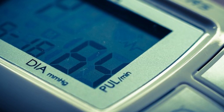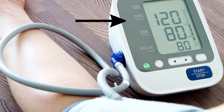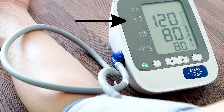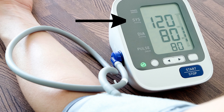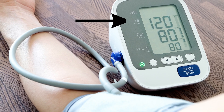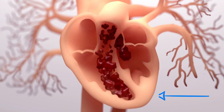Blood pressure is measured using two numbers. The first is systolic pressure: when your heart beats, it squeezes and pushes blood through your arteries to the rest of your body. This force creates pressure on those blood vessels, called systolic blood pressure — medically described as the pressure of the blood resulting from contraction of the ventricles.